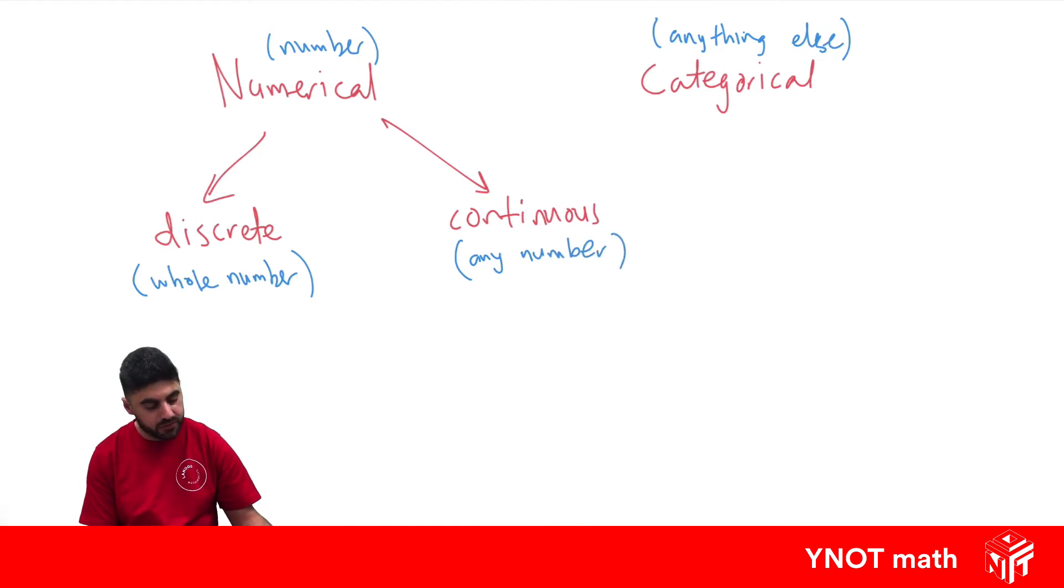So an example of discrete numerical data would be if you were asking about how many brothers and sisters someone had. You couldn't give an answer of 3.5 because you can't have half a brother or sister.